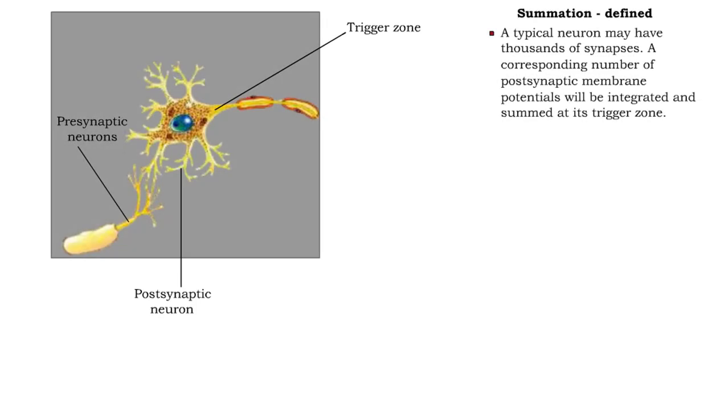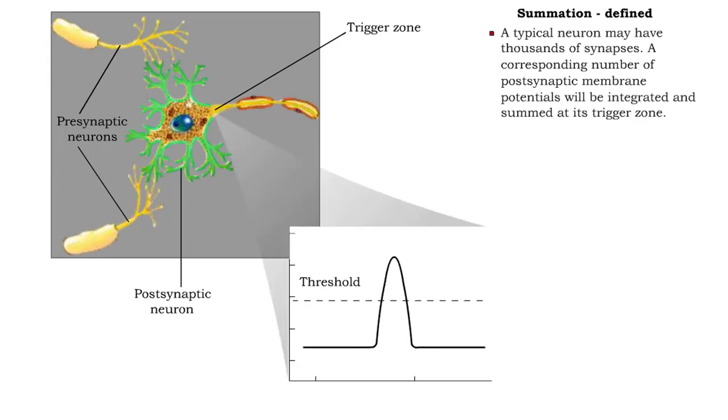A typical neuron may have thousands of synapses. The neuron will have a corresponding number of postsynaptic membrane potentials summed at its trigger zone.